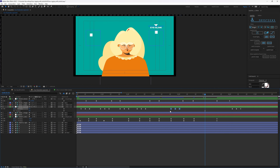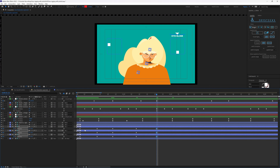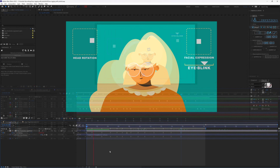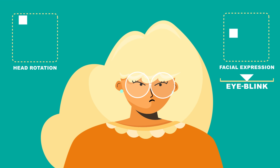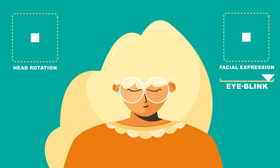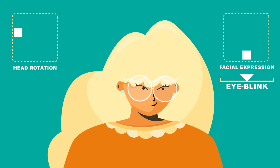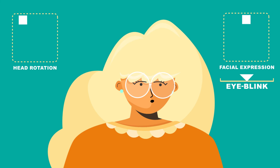After that, to animate the face you simply move the controllers and here is the final result. That's how you can rig and animate a face in different facial angles and with different facial expressions using the Joysticks and Sliders plugin.